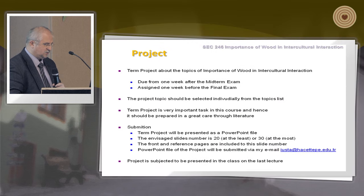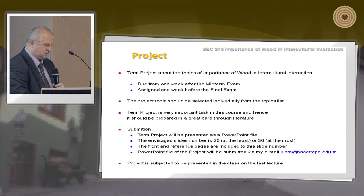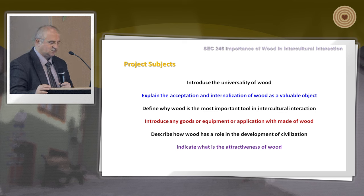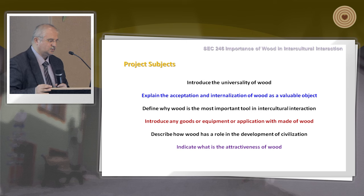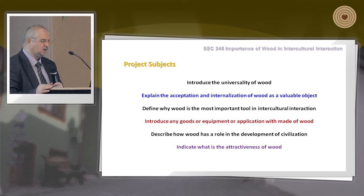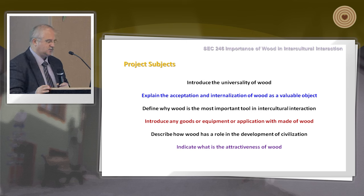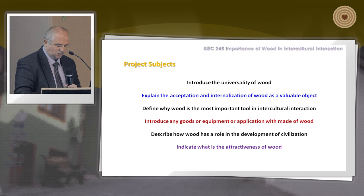For the project, students are given topics and asked to prepare between 20 and 30 slides and present to the class at the end of the term. Sample project topics include: introducing the universality of wood using images, explaining the acceptance of wood as a valuable object, defining why wood is important in intercultural interaction, introducing goods or equipment made of wood, describing wood's role in the development of civilization, and indicating what makes wood attractive.